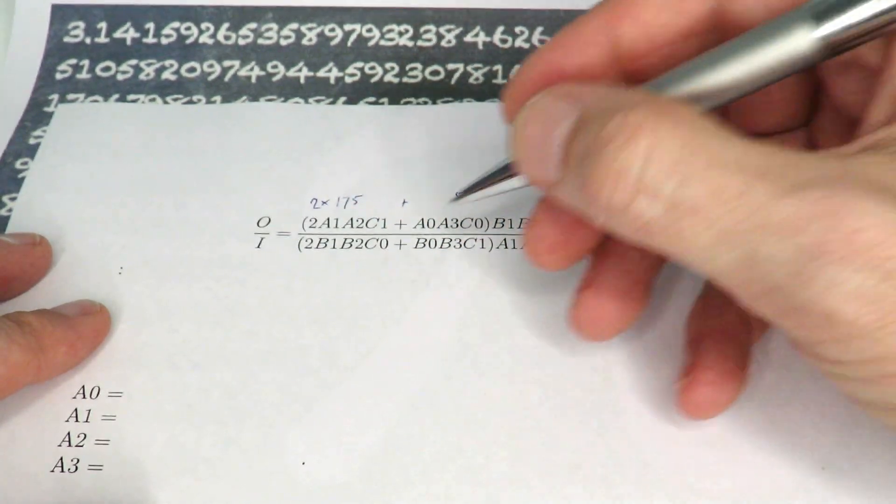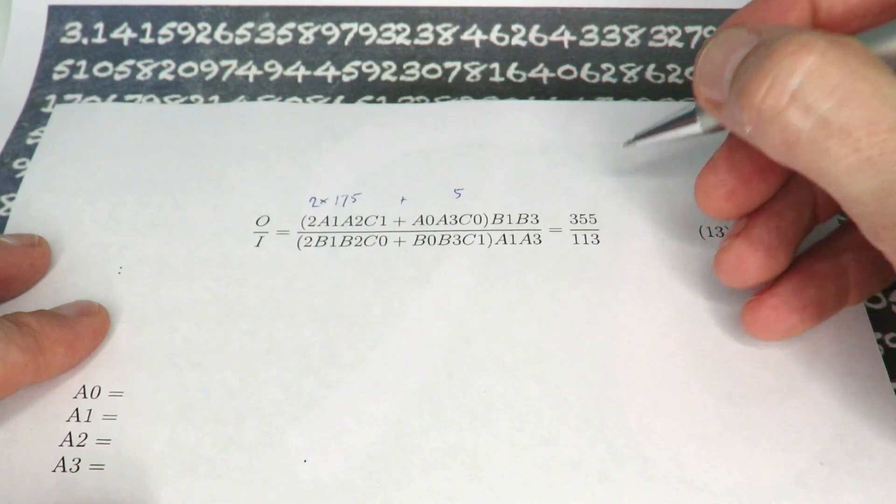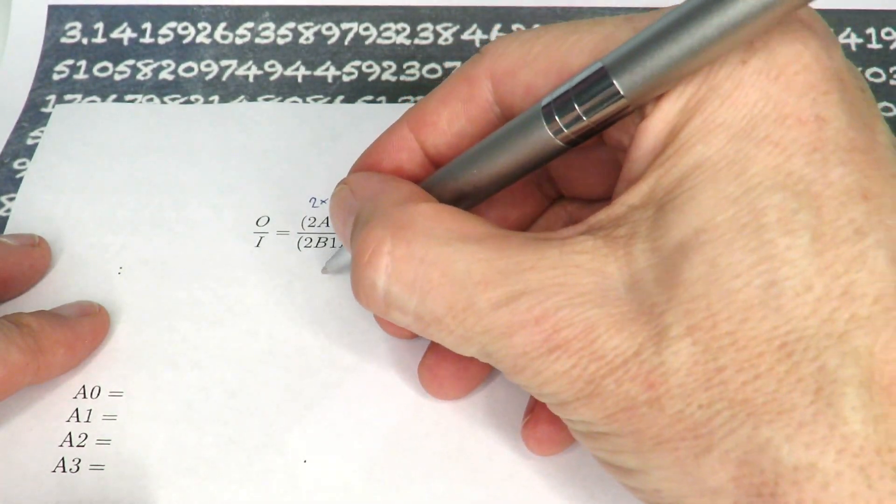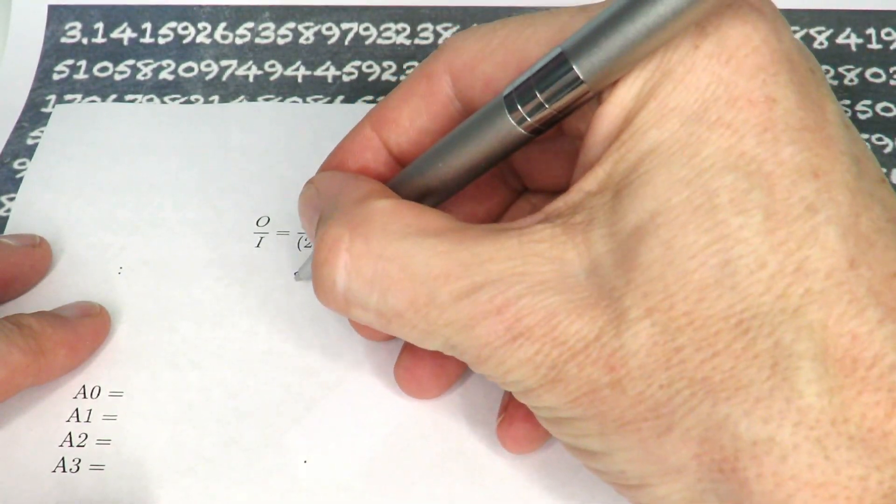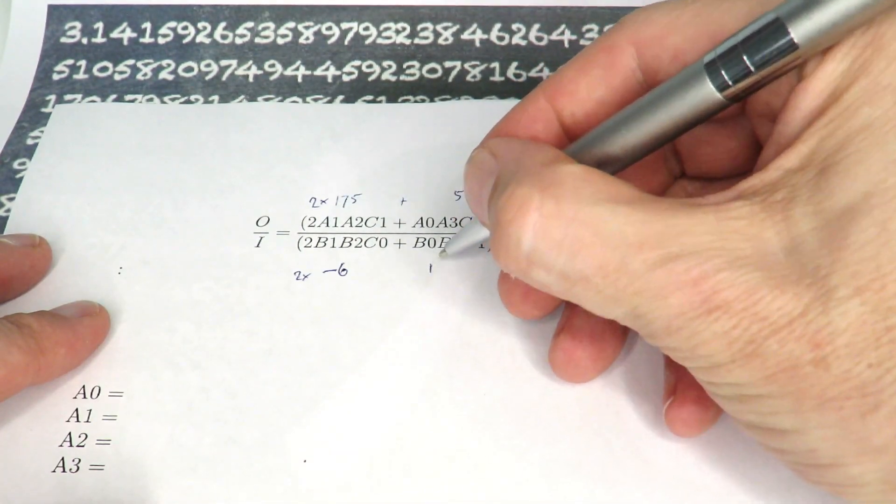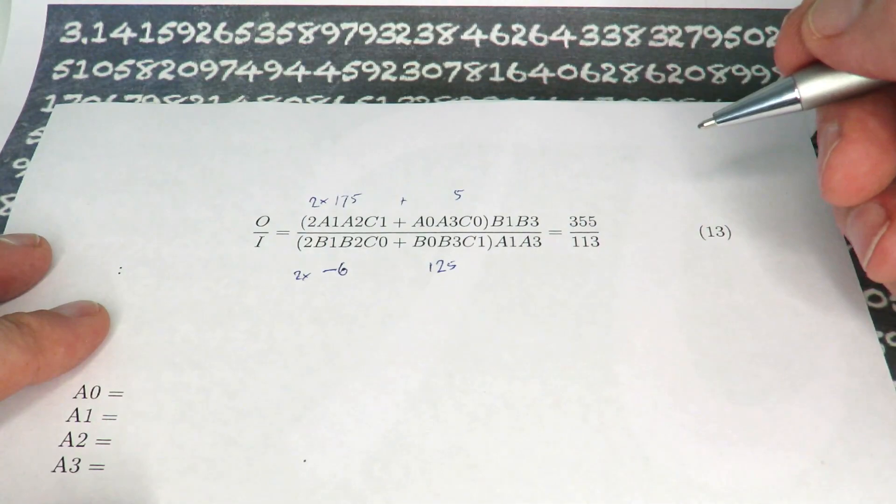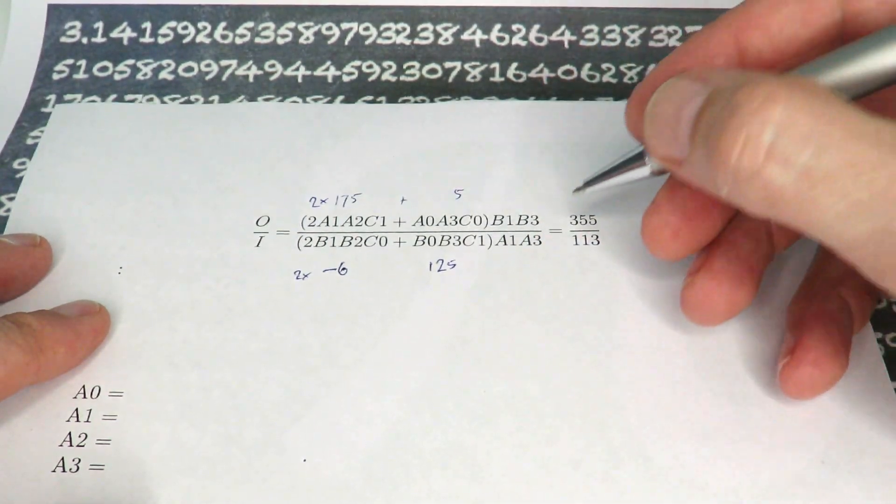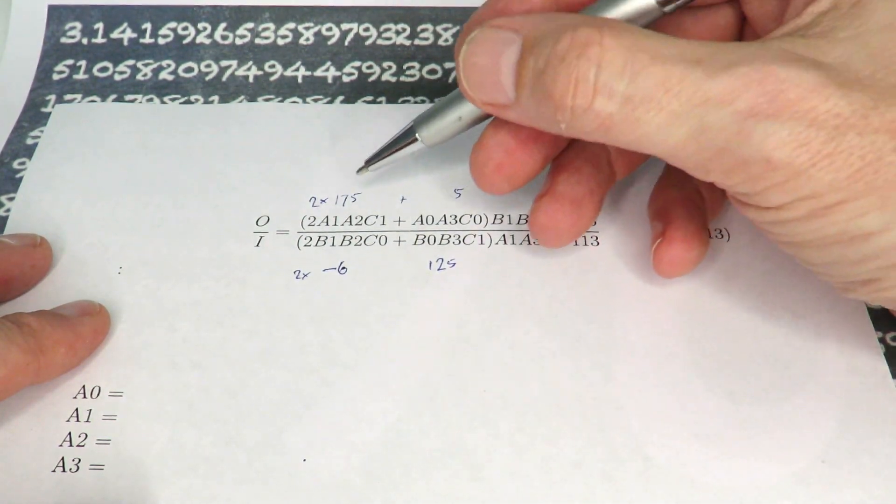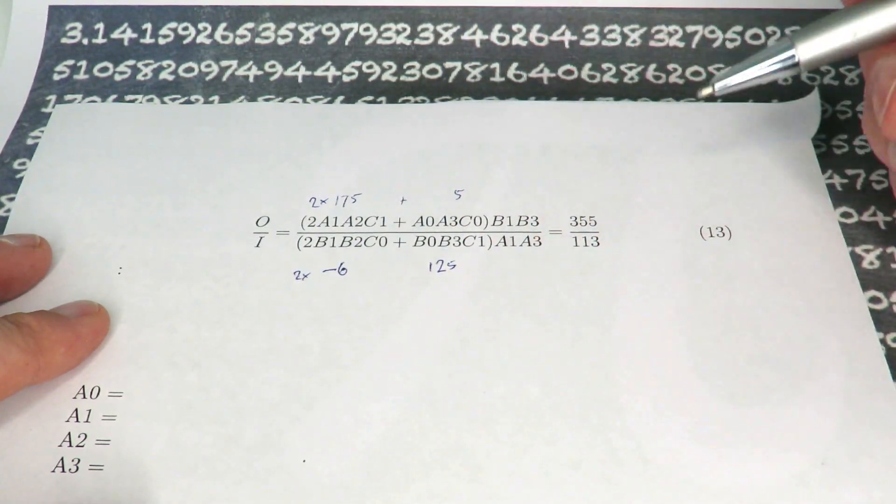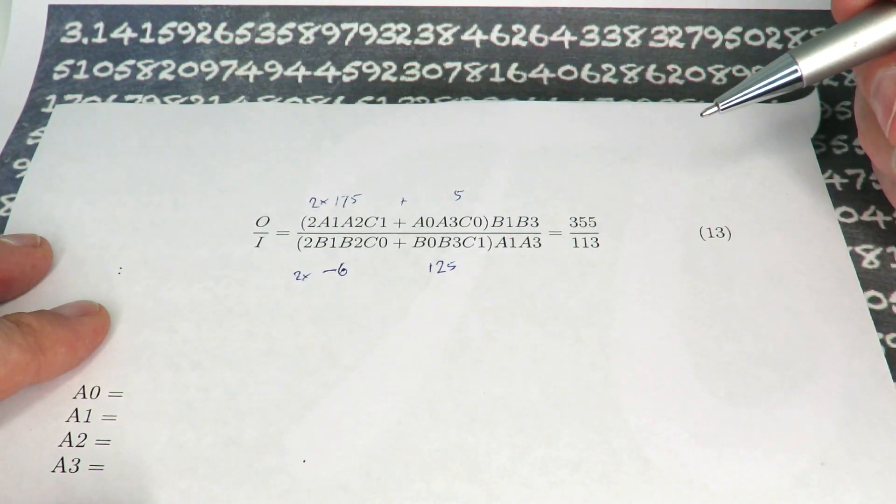And what I've done I've chosen for this one here I've chosen two times 175 plus five, so 175, so that's two times 175 plus five is equal to 355. And for the bottom equation I've chosen minus six here, so it's two times minus six plus 125. So we've got two times minus six is minus 12 plus 125 gives us 113.